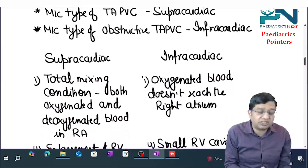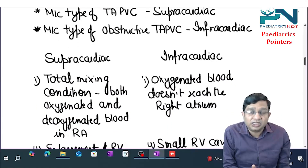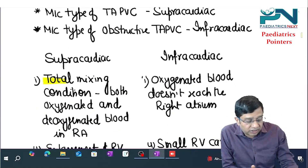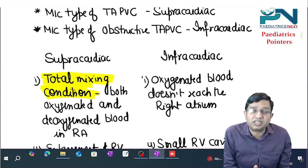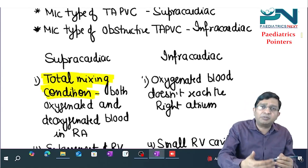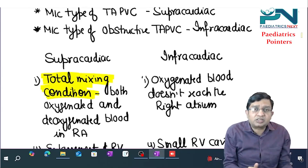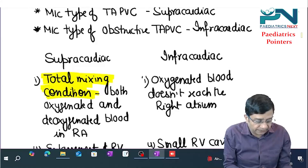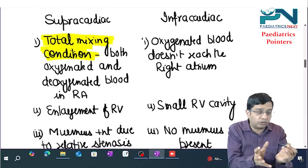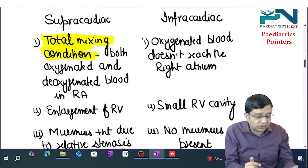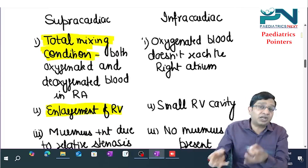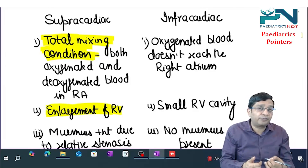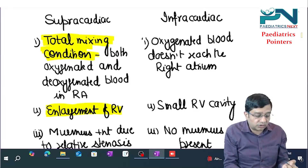In the supracardiac type, it is a total mixing condition because oxygenated and deoxygenated blood mix in the right atria. In the infracardiac type, pulmonary vein blood does not reach the right atria. In the supracardiac type, the right atria has more blood, so the right ventricle is enlarged. But in the infracardiac type, blood is not reaching the right atria, so the right ventricular cavity is small.